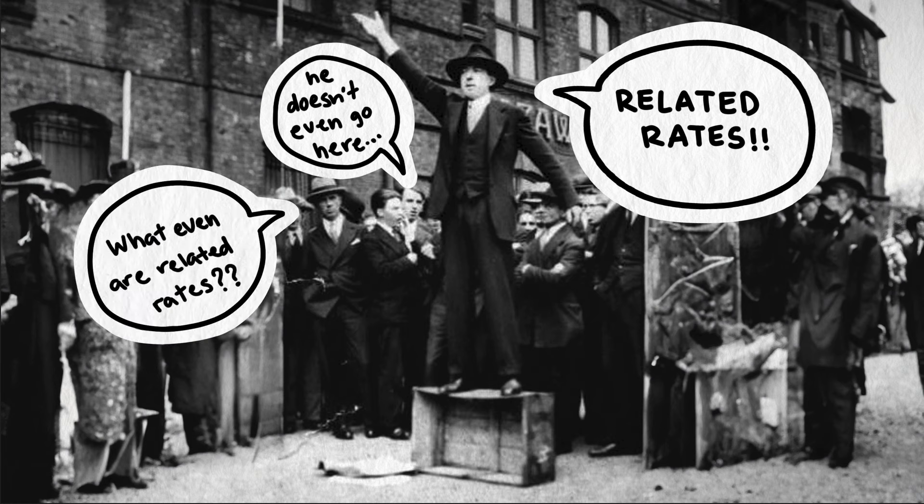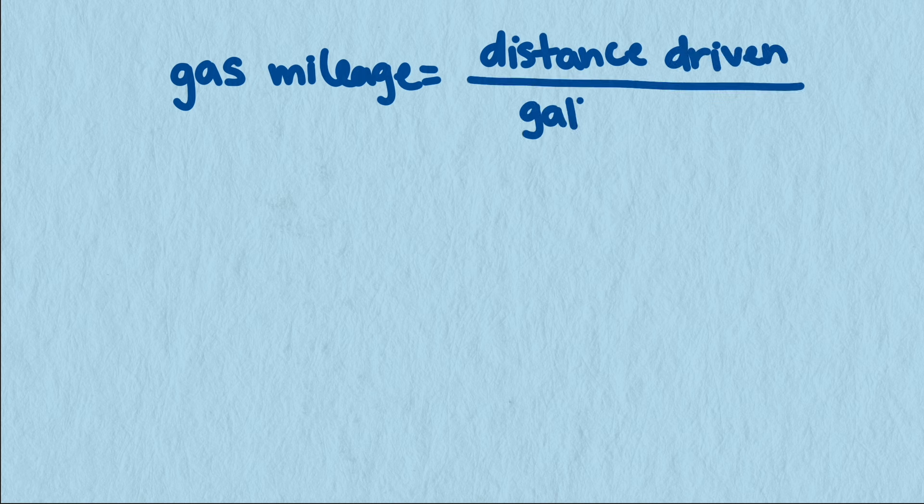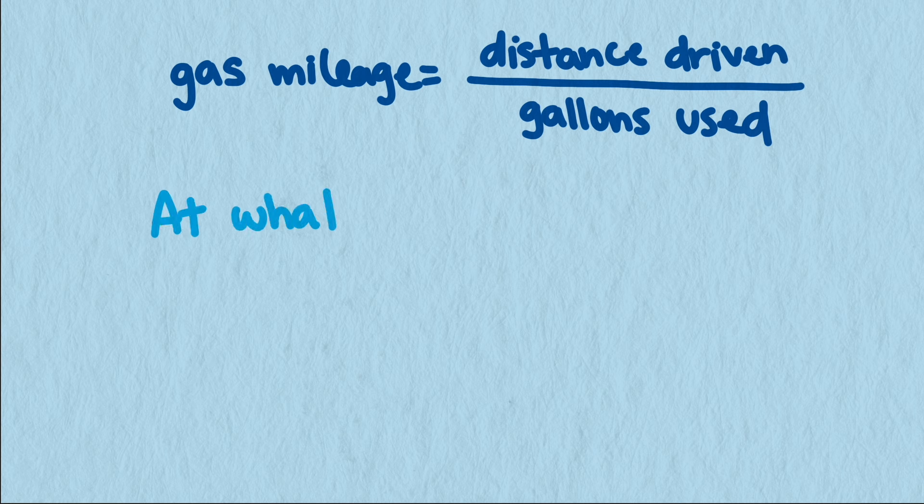So what is the related rates technique? It's quite slick, actually. We're used to dealing with equations, like the gas mileage formula, that shows the relationship between different quantities. In this case, gas mileage, distance traveled, and volume of gasoline. Related rates allows us to create a new formula that shows the relationship between the rates at which those quantities change.